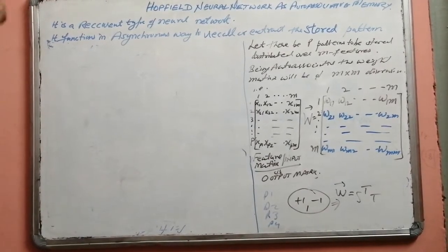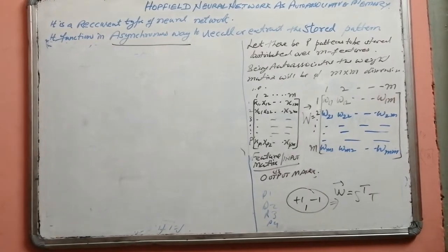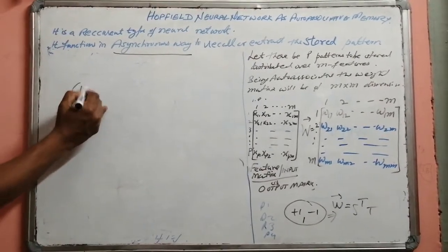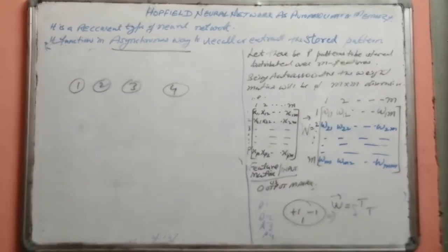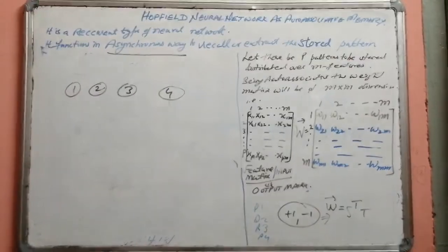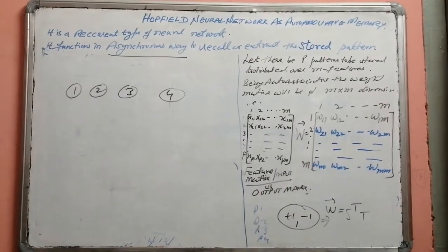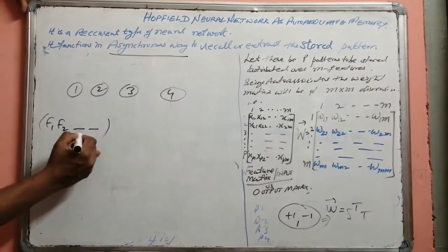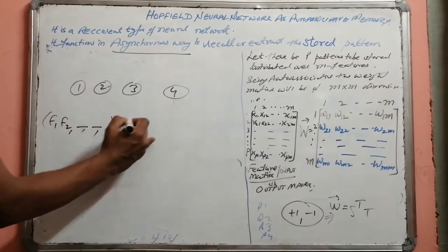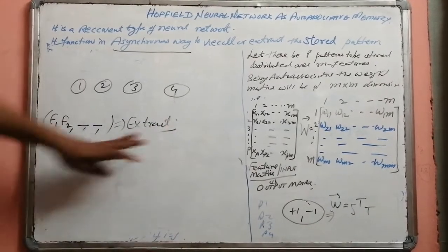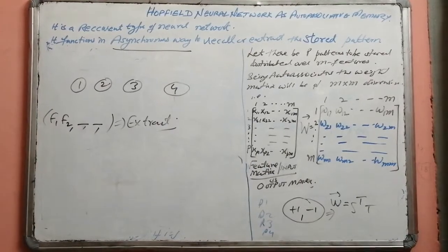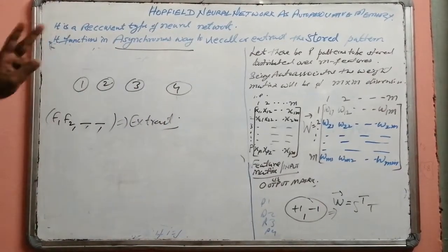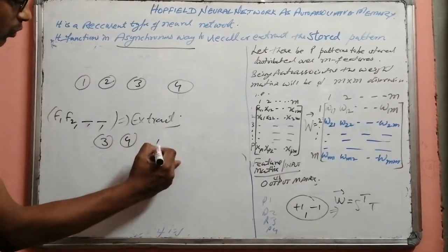The Hopfield neural network follows an asynchronous way of activating the neurons. If there are four neurons and the weight matrix was initialized storing four patterns, and we have a new pattern with features F1 and F2 while F3 and F4 are missing, we want to extract the most similar stored pattern. Before testing, we need to assign an order of asynchronous activation — let this order be 3, 4, 1, and 2.